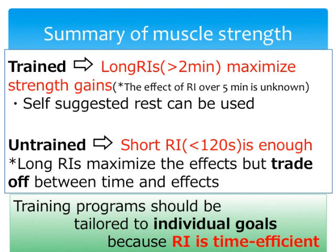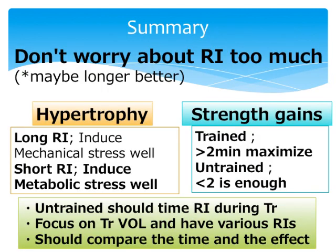For untrained individuals, less than 120 seconds of rest interval should be enough to increase strength. Longer intervals maximize the impact on strength increases, but training time is of course longer. You have to weigh time efficiency against maximizing the impact when designing programs.